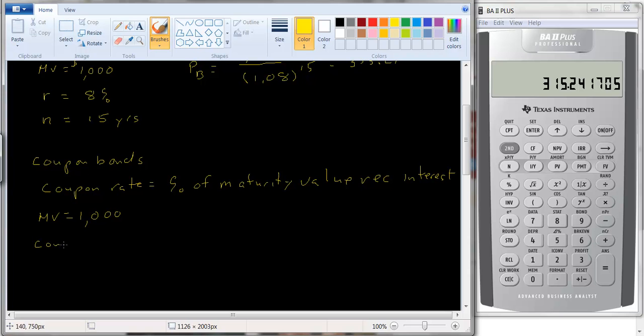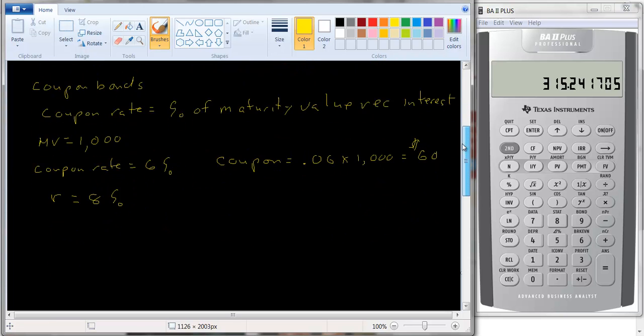Let's say the coupon rate is equal to 6%. And we'll use the same interest rate we had before of 8%. Well, if it's a 6% coupon rate, that means that your coupon or your interest payment is going to be equal to .06 times 1,000, which is equal to $60. So you receive $60 a year in interest.